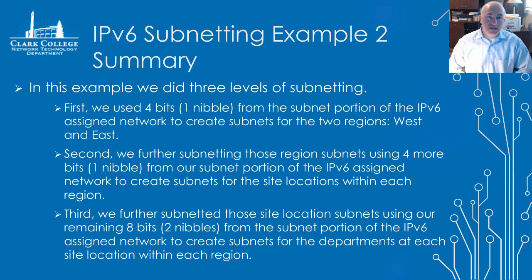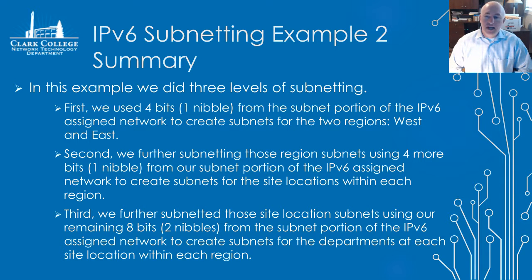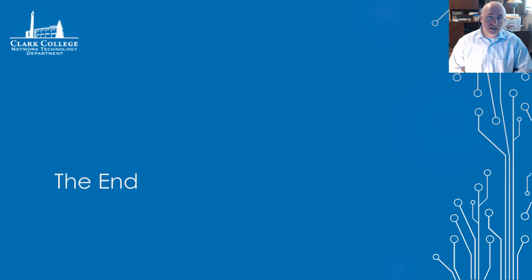To summarize example two, we did three levels of subnetting. First, we used four bits from the subnet portion of our IPv6 assigned network to create subnets for our two regions — west and east. Second, we further subnetted those regions using four more bits to create subnets for the site locations within each region. Third, we did another round of subnetting using the remaining eight bits to create the departments within each site within each region. I hope now you have a better understanding of IPv6 subnetting.